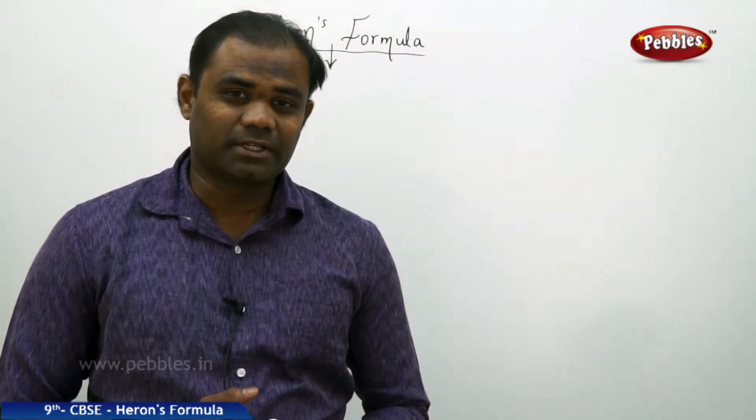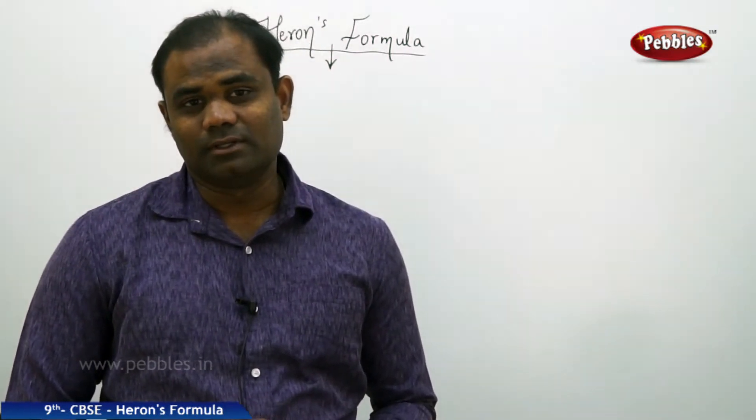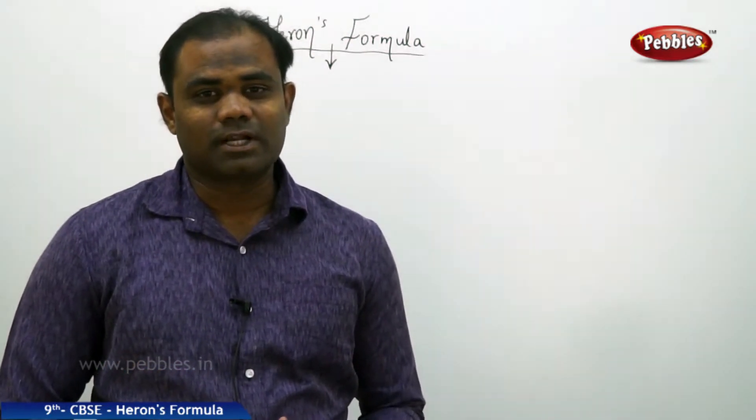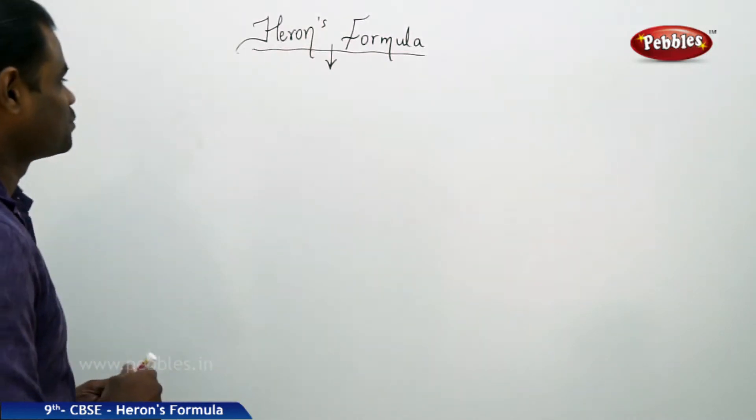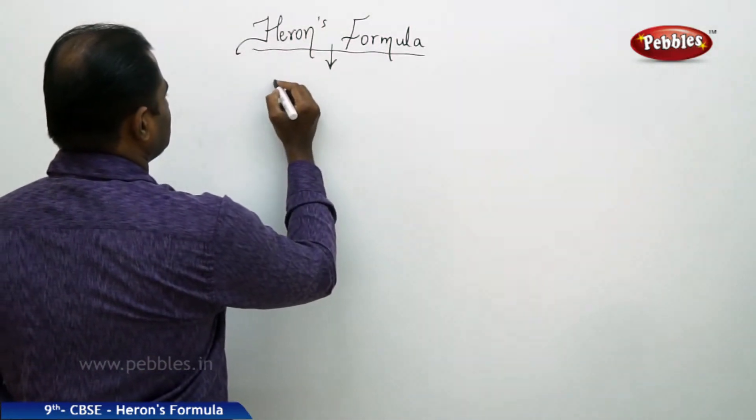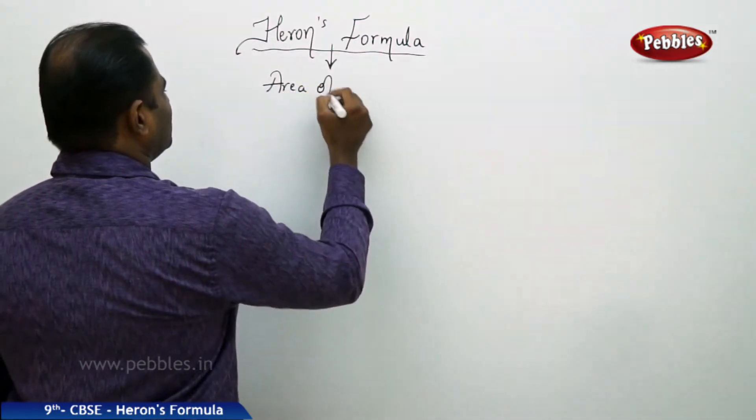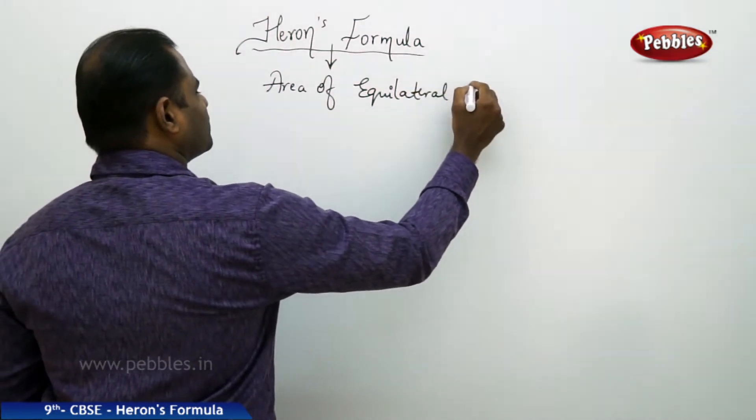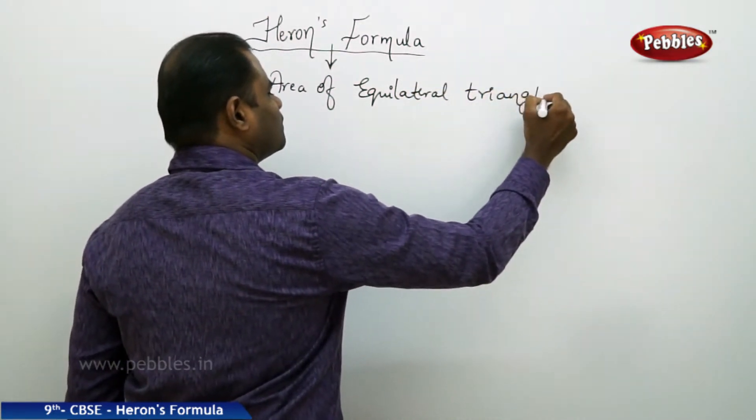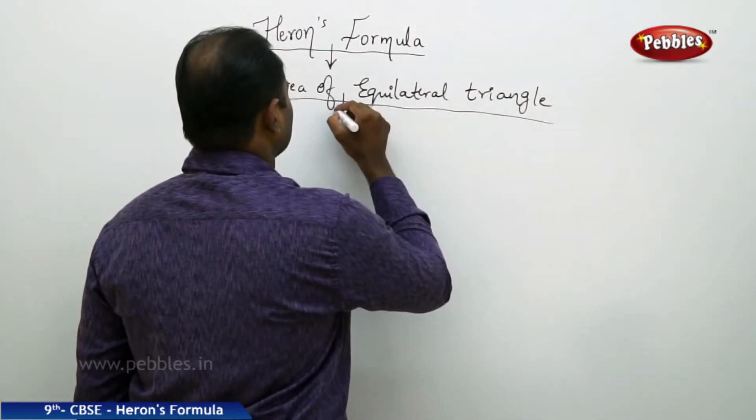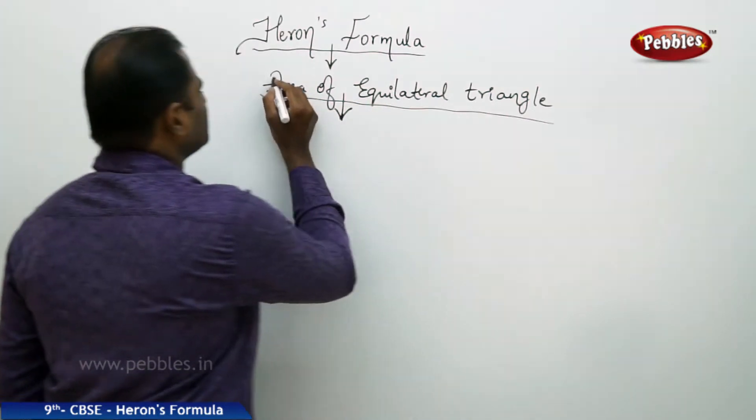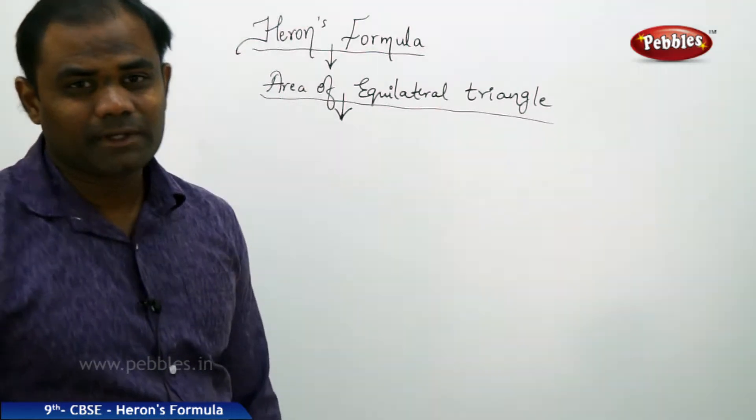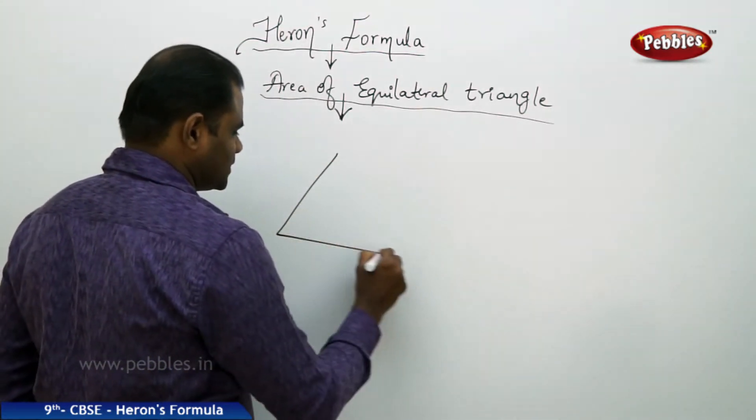let's see some special cases of the areas of triangles which can be found for different cases. Initially to start with equilateral triangle, area of equilateral triangle. So what is area of equilateral triangle? We all know that equilateral triangle is a triangle whose all sides are equal.